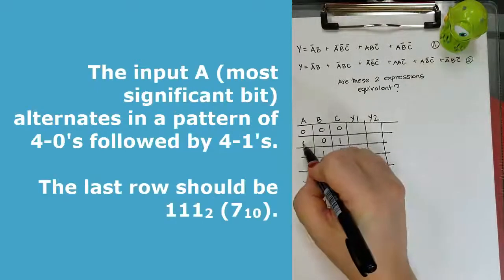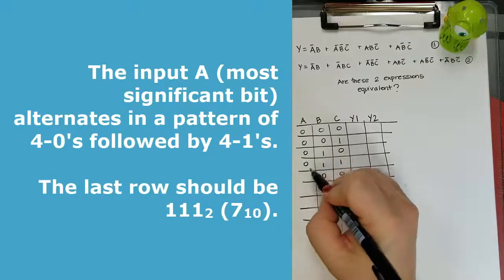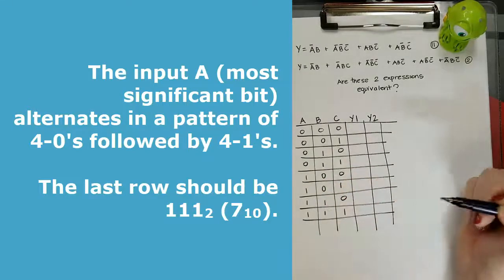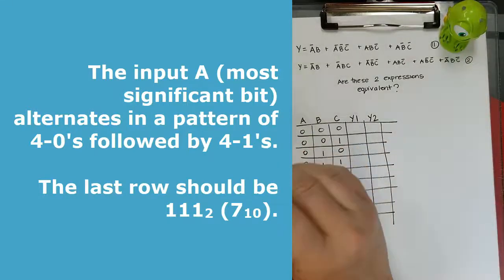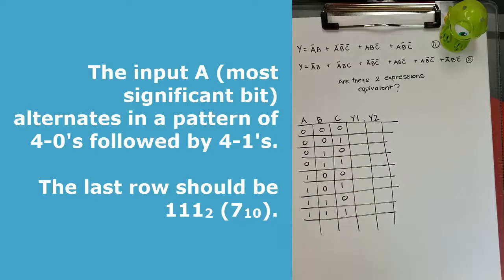And then A goes four zeros, and then four ones. So the very last line should be one, one, one, which would be seven.